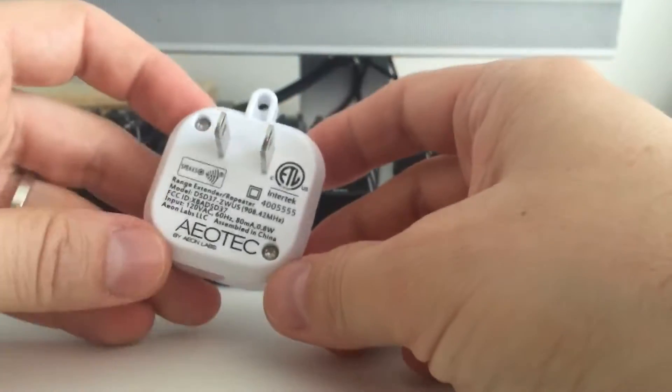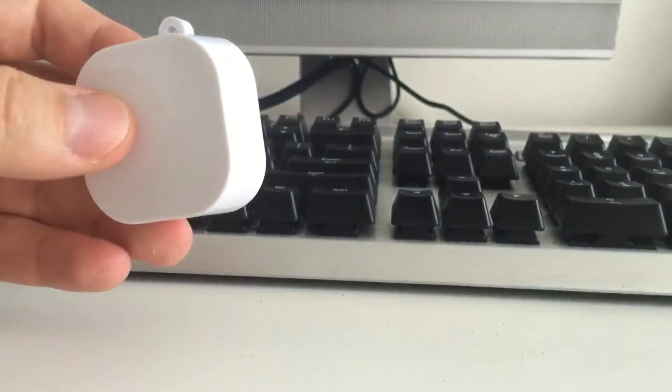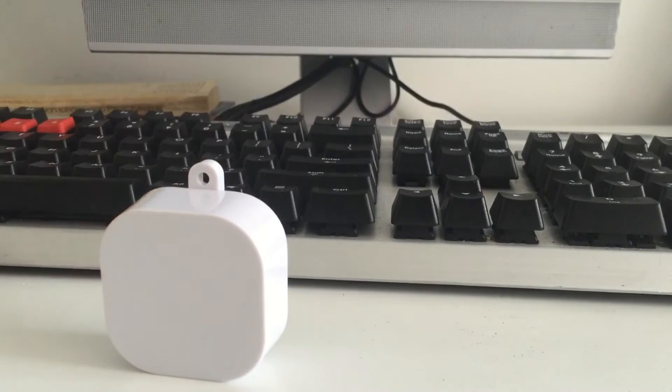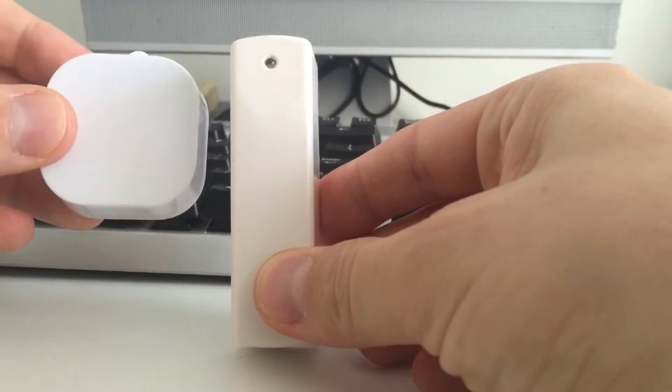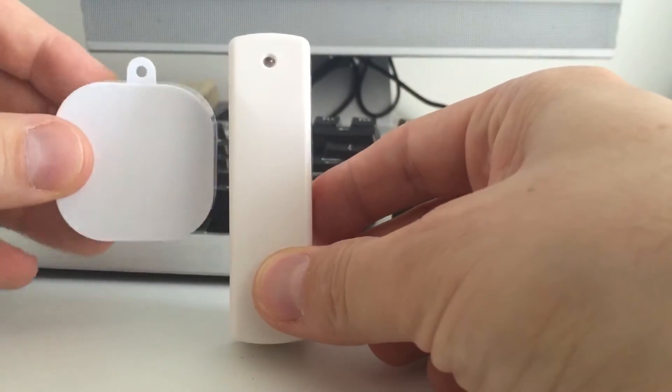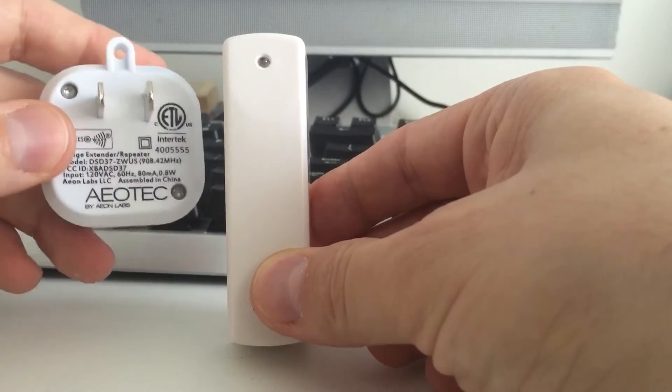I know it's hard to really tell, but this is a door and window sensor from Ecolink. This is the size of the door sensor, this is the size of the actual repeater. Look at the size.